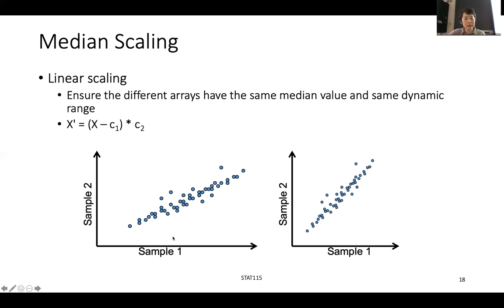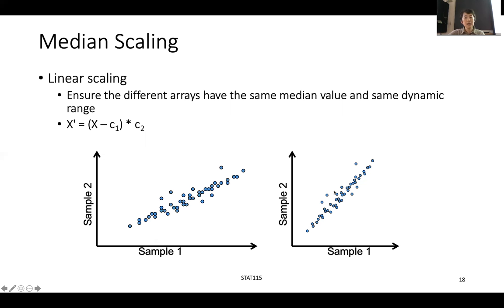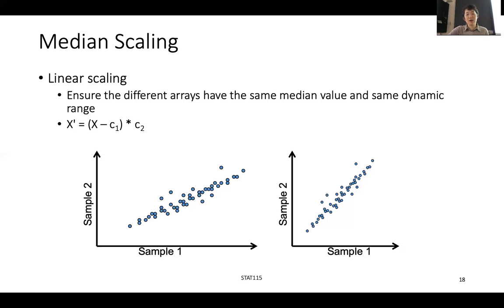If we were to look at this, you might see that sample one has a higher median and it also has a higher spread — the range is much bigger. On the y-axis, things are fairly correlated, but the mean is different, the median is different, the variation is different. So median scaling is just: you subtract each sample by a scaling factor to move their medians to be the same, then multiply by another coefficient so the two are on the diagonal, making the numbers on x and y more comparable.